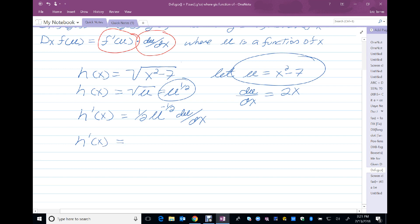And now it's just a matter of putting everything back in and cleaning it up a little bit. So I have a 1 half, u to the negative 1 half, which u is x squared minus 7, times du dx, which is 2x.